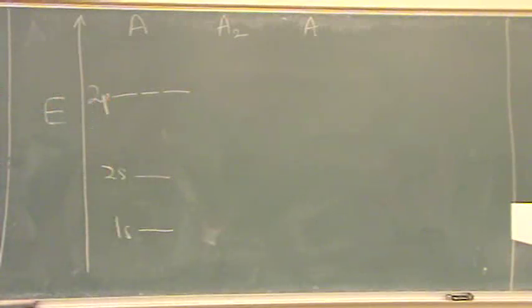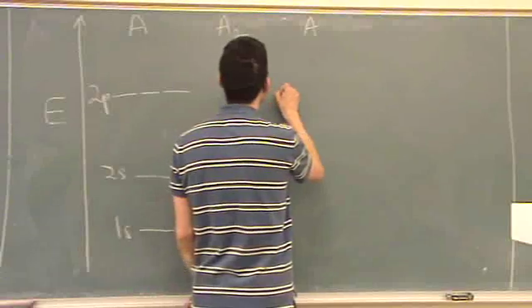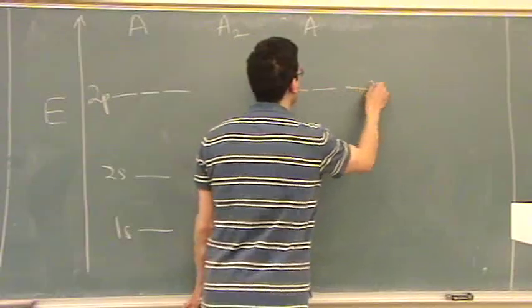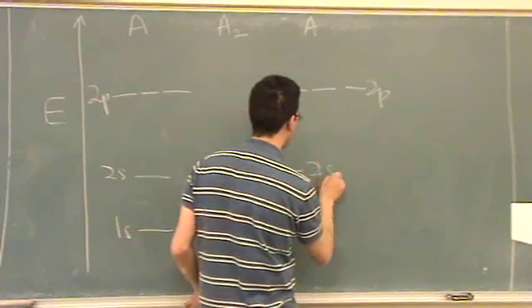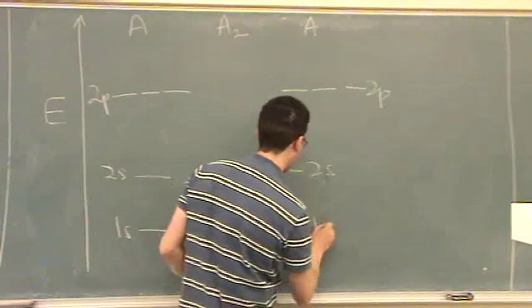2p, so a 1s, there's going to be 2s orbitals, 2p orbitals, and on the other side, same thing. There's a 2p, 2s, and the 1s.